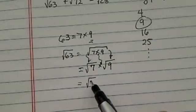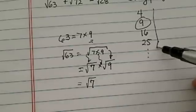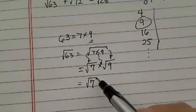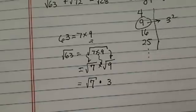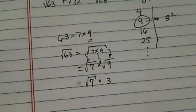And radical 7, since it's not a perfect square, it's not on our gold list here, then we leave it alone, and then this one becomes a 3, because this becomes a 3 squared. So it took care of 63.